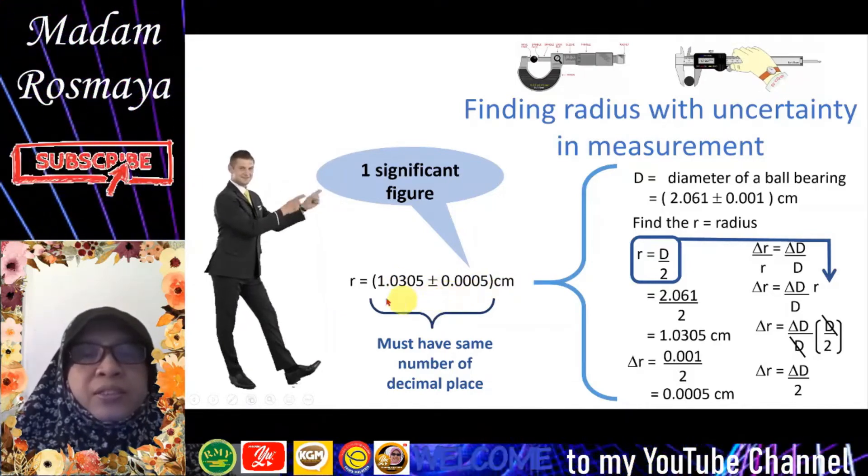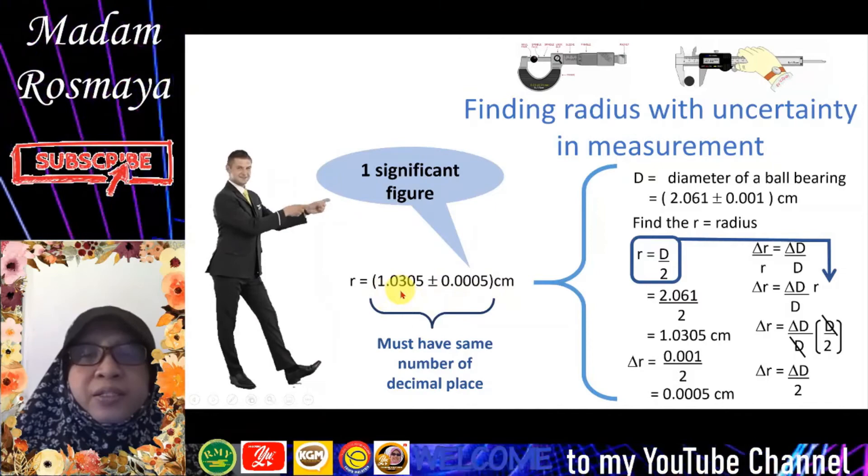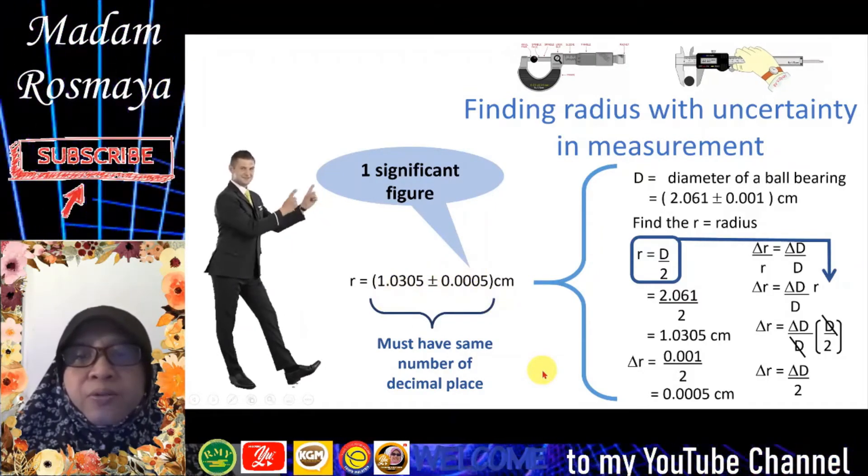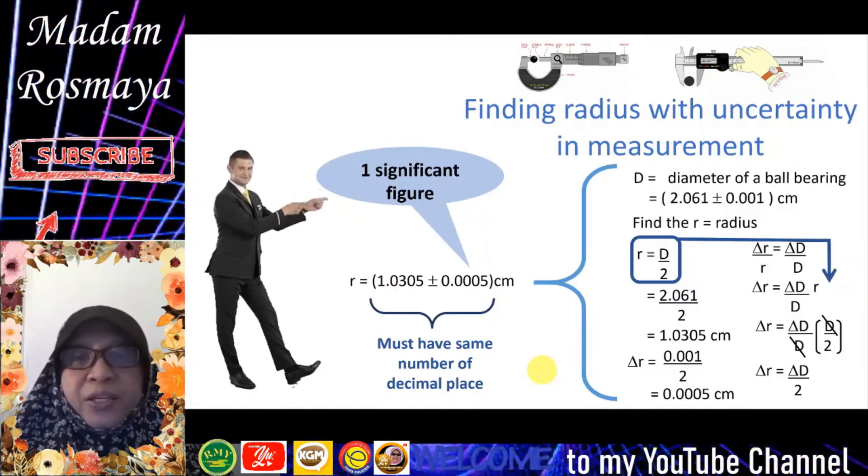So this is the answer for radius with uncertainty. That's all for the video and thank you for watching.